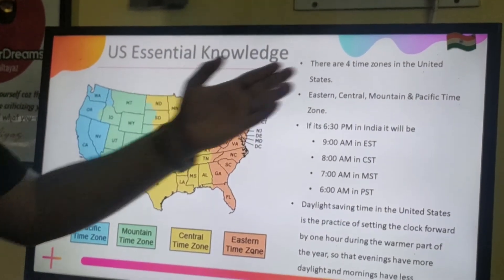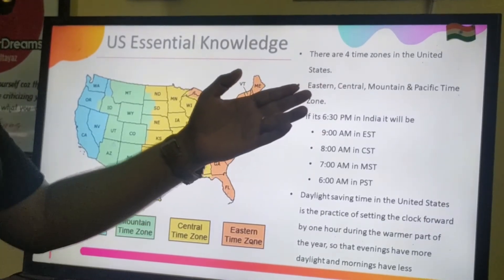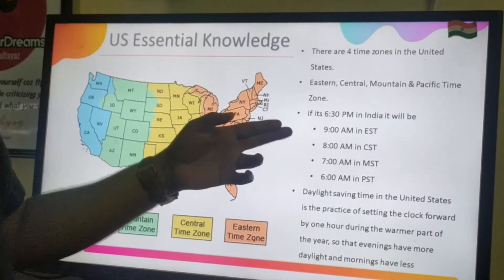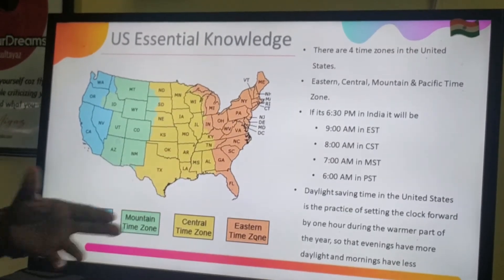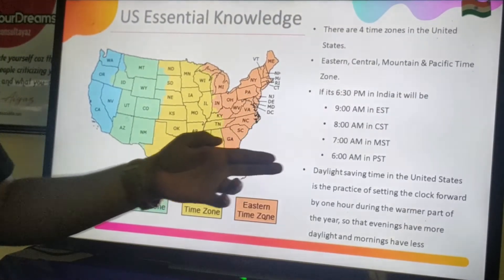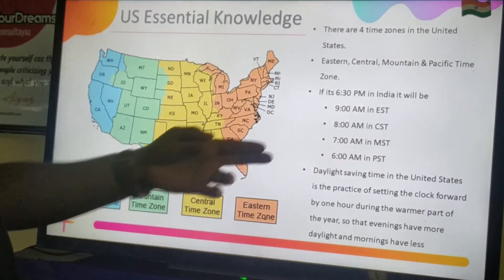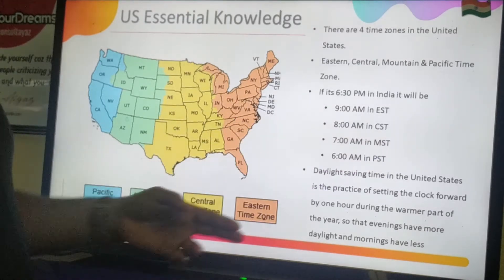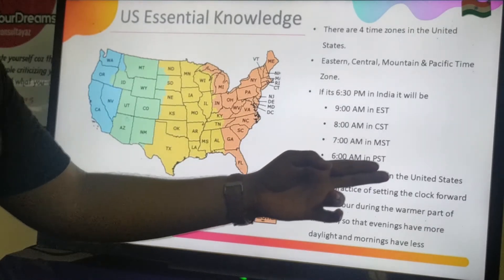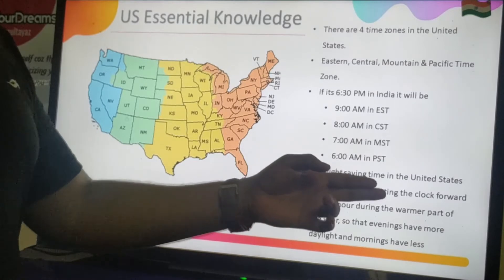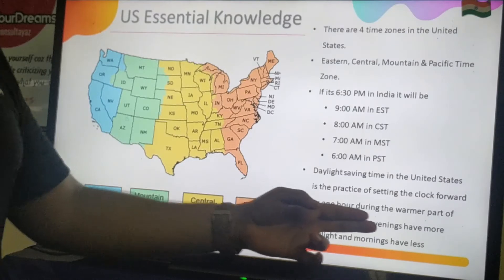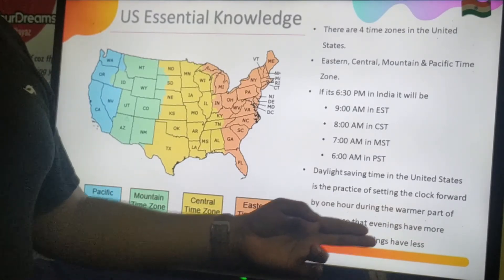There are 4 time zones in the US: Eastern, Central, Mountain, and Pacific. For example, if it is 6:30 pm in India, it will be 9 am in Eastern Standard Time, 8 am in Central Standard Time, 7 am in Mountain Standard Time, and 6 am in Pacific Standard Time. Daylight Saving in the United States is a practice of setting the clock forward by one hour during the warmer part of the year, so that evenings have more daylight and mornings have less.